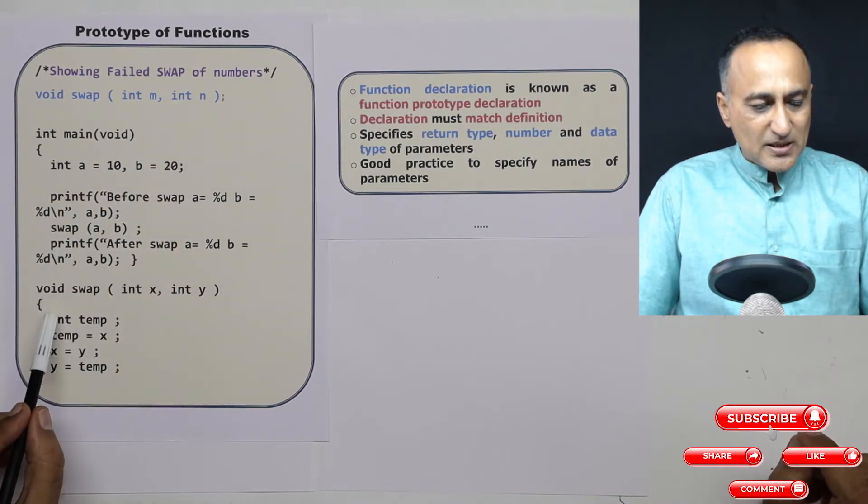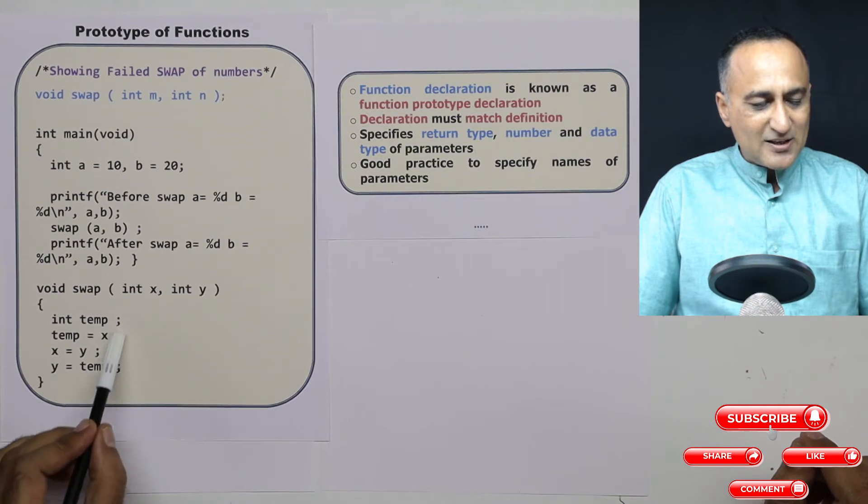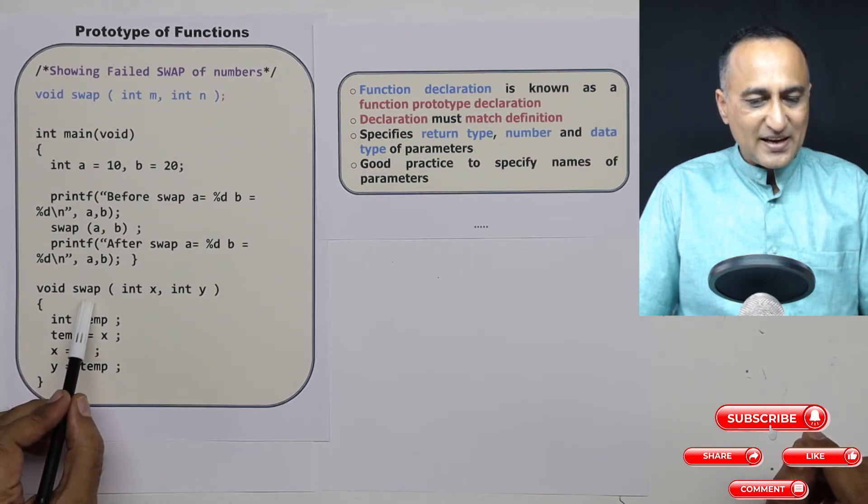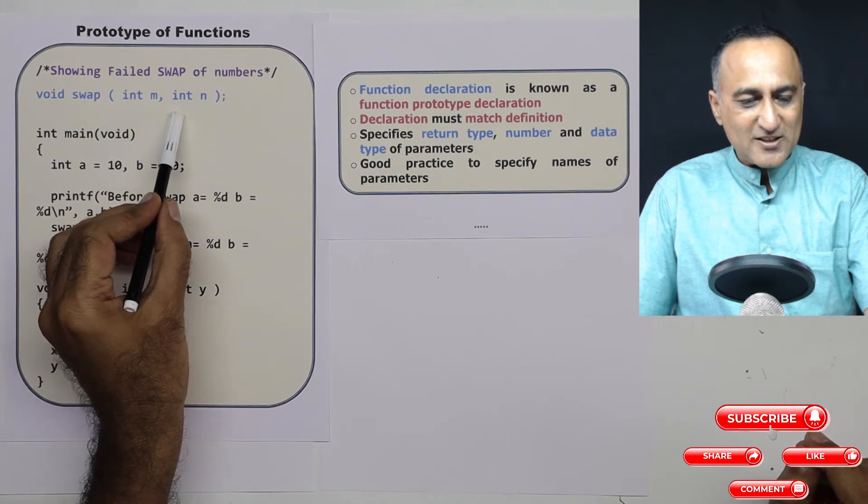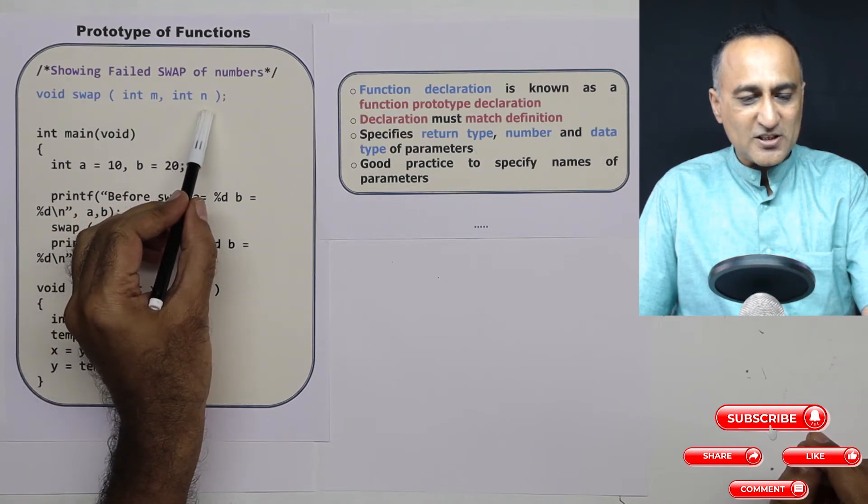Now this particular thing is the function code, this is the name. This declaration of the function is known as the function prototype or the function signature.